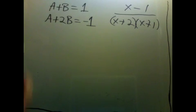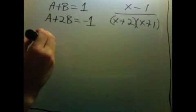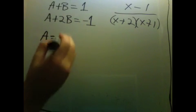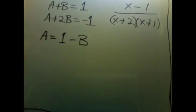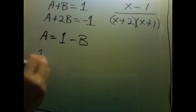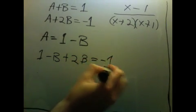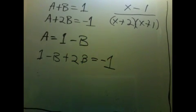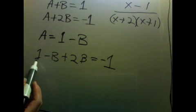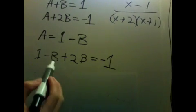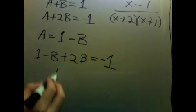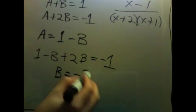So to solve this, I'll just solve the first one for a by subtracting b to the other side, and plugging this into the second equation, you get 1 minus b plus 2b equals minus 1. I'll subtract the one to the other side, and combine these to get b equals negative 2.